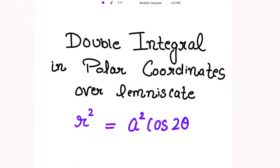Double integral in polar coordinates over the lemniscate r² = a² cos(2θ).